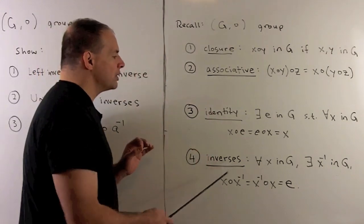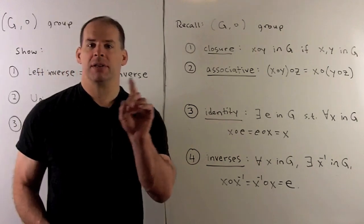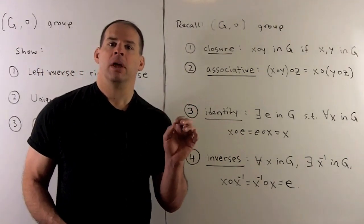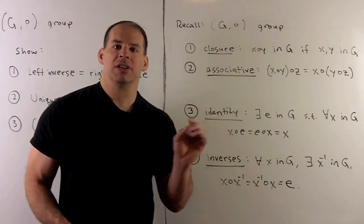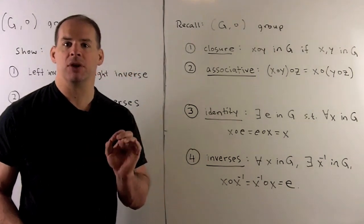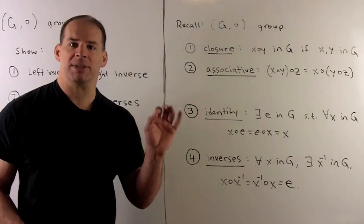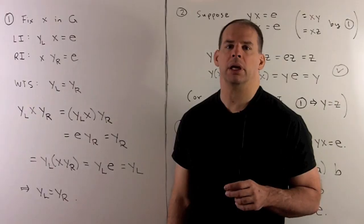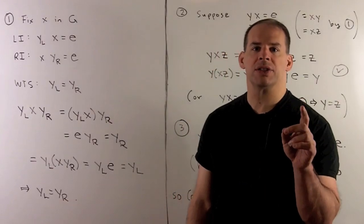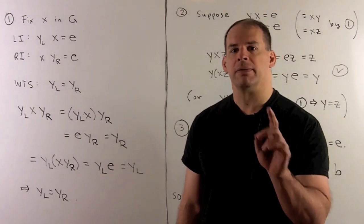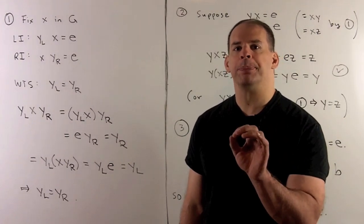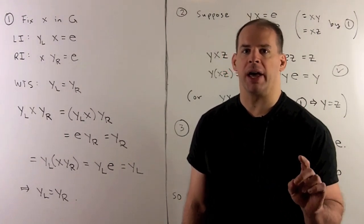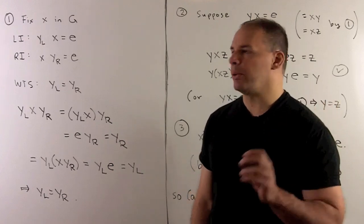Finally, we have inverses. So if we fix some element X in the group, there's going to be another element X inverse, such that if we multiply X times X inverse, it's equal to X inverse times X, which is equal to the identity element. Now, in practice, the first part says if I check for an inverse on one side, we automatically get it for the other side. So let's see how we do that.